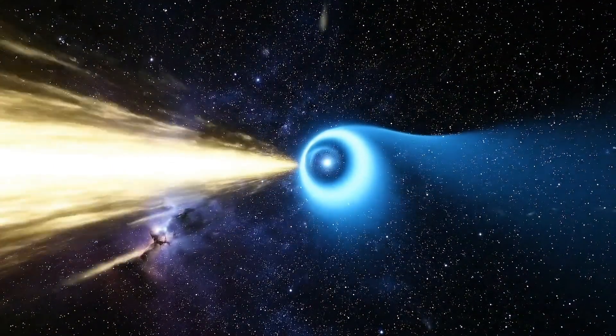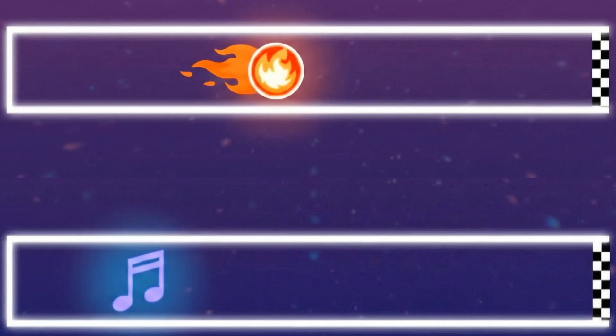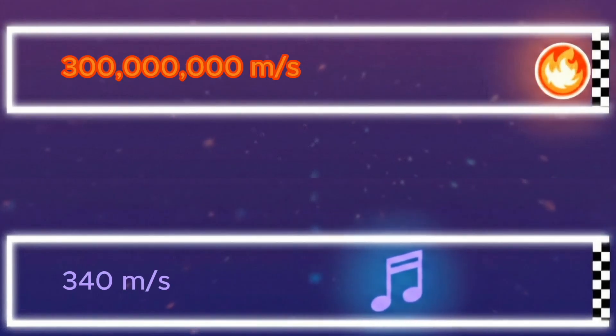This is the oldest race in the history of the universe. Light versus sound. Light travels at an incredible 300 million meters per second, sound almost a million times slower.